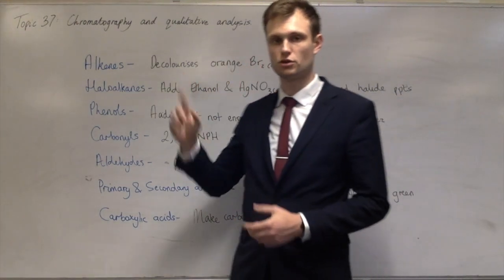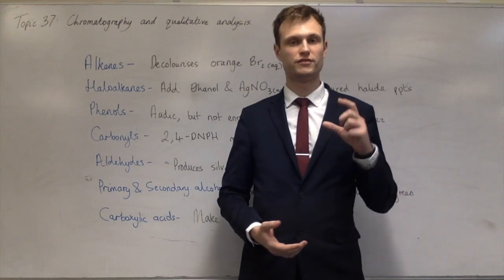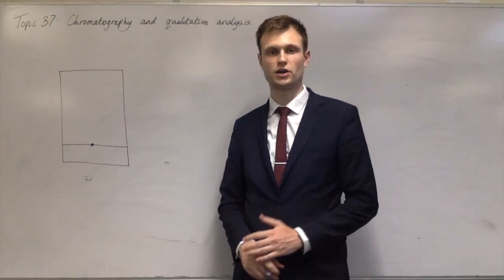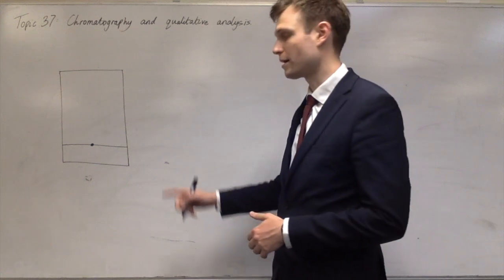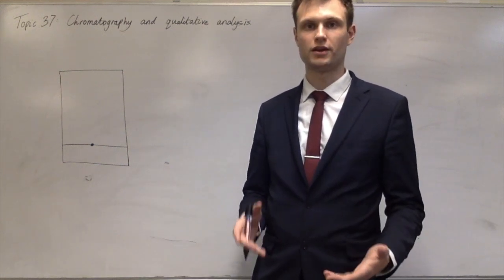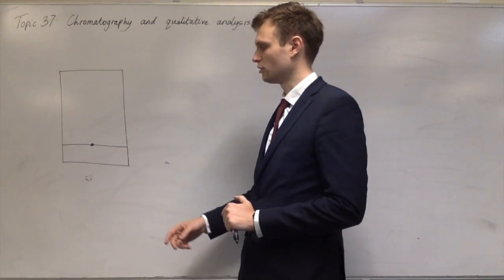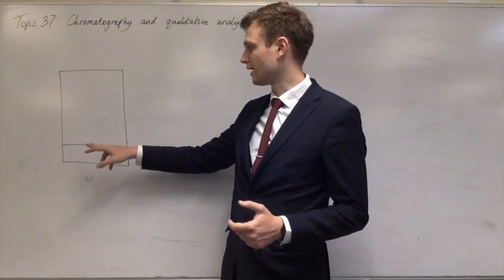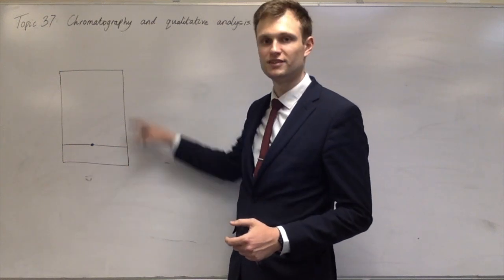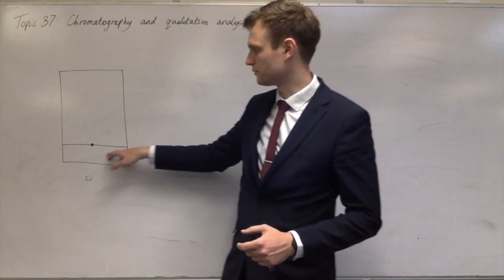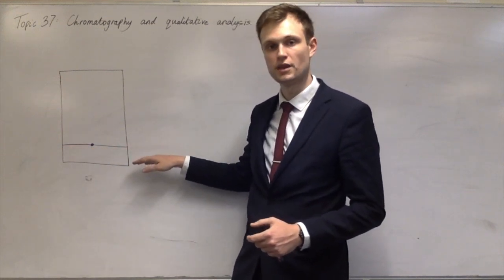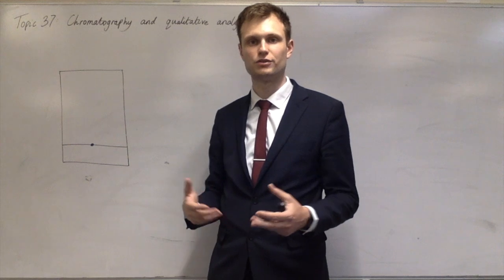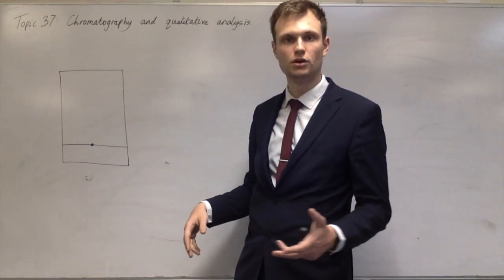The next thing we have to talk about is chromatography. You do chromatography in year 7 with filter paper, pens, dyes, and water, and this is very similar to that. With paper chromatography, you'd normally do it with, say, a brown felt-tip pen. You put the ink on a line on a piece of filter paper, then you put the filter paper so that the water comes up to just below this line. As the water soaks up the paper, the different dyes will dissolve into the water, and depending on how soluble they are, they'll go further up or lower down on the filter paper.